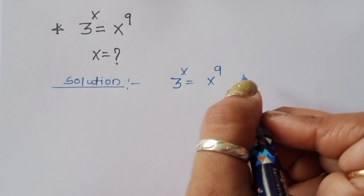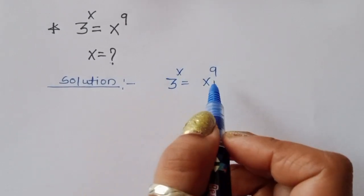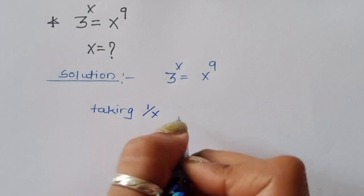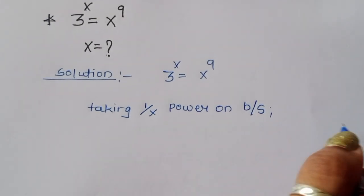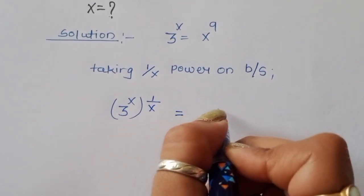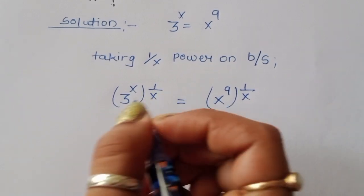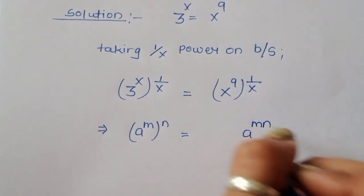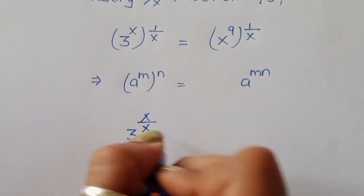Here, we have to cancel x in the exponent, so we take the 1 upon x power on both sides. So 3 power x power 1 upon x is equal to x power 9 power 1 upon x. Now we know the formula: if a power m power n is given, we can write it as a power mn.